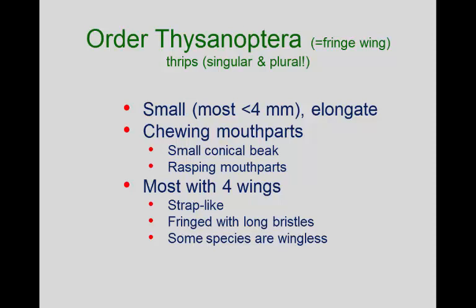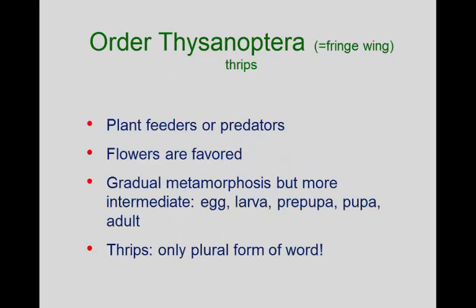We say thrips have chewing mouthparts, but most people would say it's a special modification — it almost looks like sucking mouthparts but it's not quite. They're asymmetrical: only one mandible and one maxilla has been elongated. They use this to jab, poke, and scratch the surface of plant material — rasping the surface to extract the juices out of cells. Virtually all of these are plant feeders, though there are a couple of species that are predators and a couple that feed on fungi.